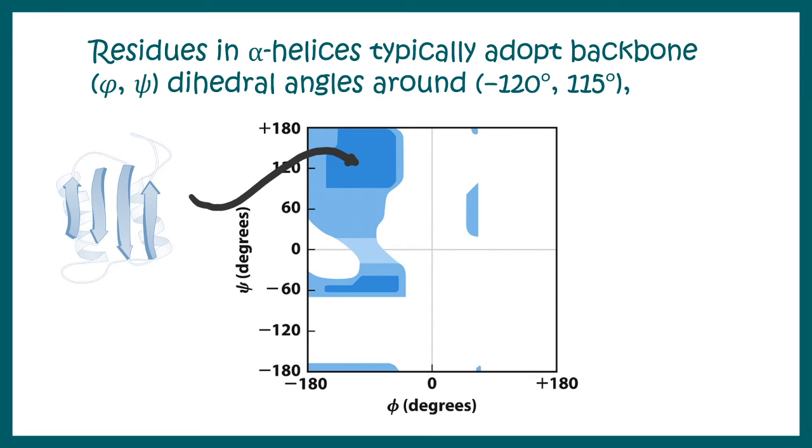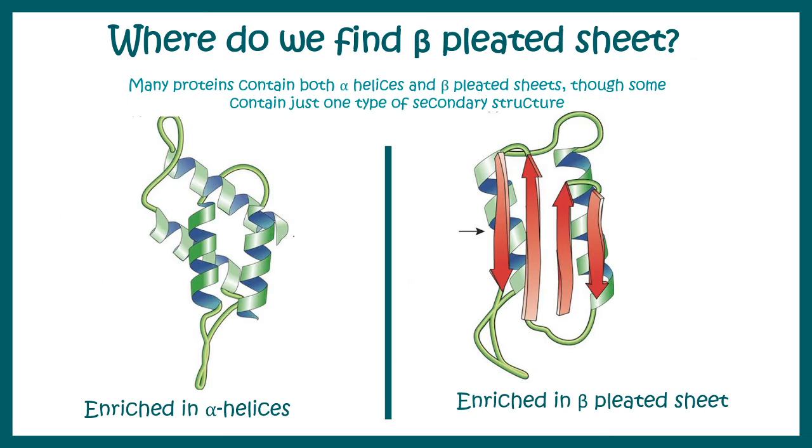The question is where do we find the beta pleated sheets? It turns out many proteins contain both alpha helices and beta pleated sheet as their secondary structures, but the proportion is different. Some proteins might be enriched in beta pleated sheet while some others are enriched in alpha helices.